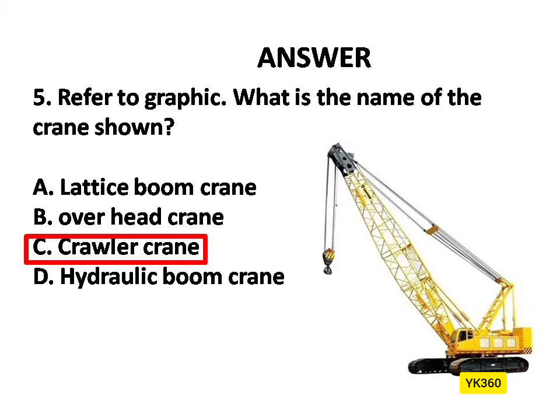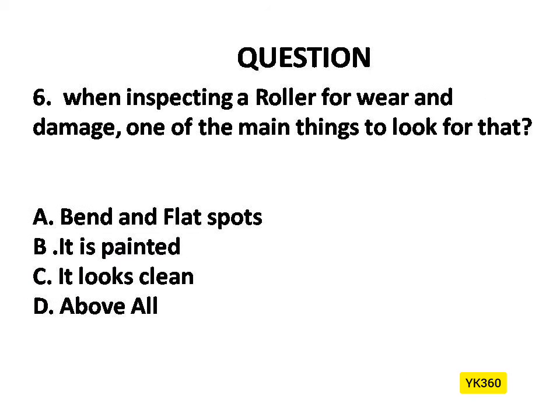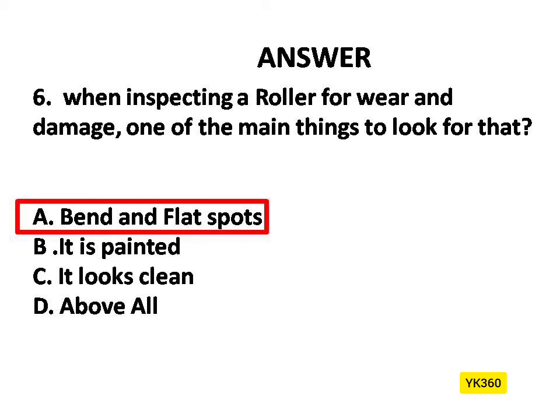Question Number 6. When inspecting a roller for wear and damage, one of the main things to look for is: A. Bend and flat spots, B. It is painted, C. It looks clean, D. Above all. Answer is Option A: Bend and flat spots.